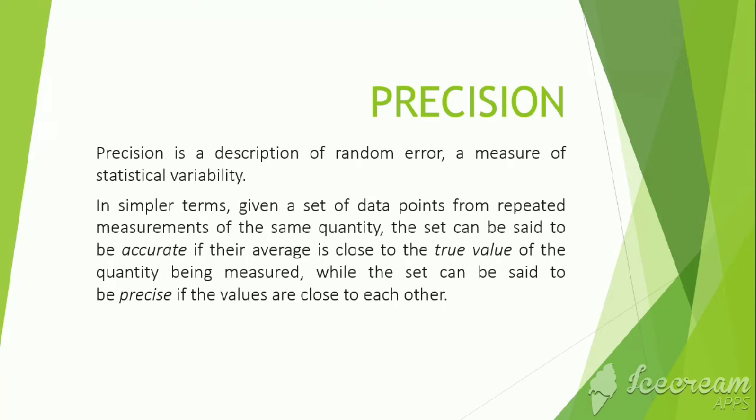Precision is a description of random error, a measure of statistical variability. In simpler terms, given a set of data points from repeated measurements of the same quantity, the set can be said to be accurate if their average is close to the true value of the quantity being measured, while the set can be said to be precise if the values are close to each other.